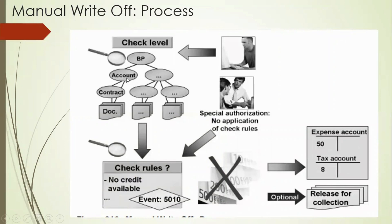To do the write-off, we first identify the business partner account, contract account content, and documents — how many documents are pending and for how long. We need to check the rules: is it not cleared for a long time, is the amount high or low? We also need authorizations from specific people, like superiors, who give the go-ahead. Once permission is given and the customer and amount are identified, we can proceed with the write-off. Write-off basically totally clears or releases the collection — that amount will be closed for the general ledger and for the contract.